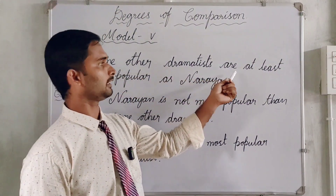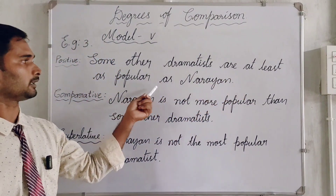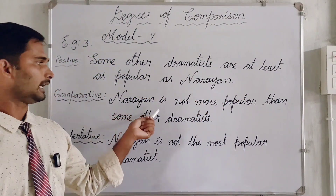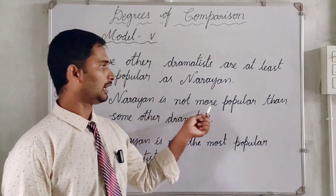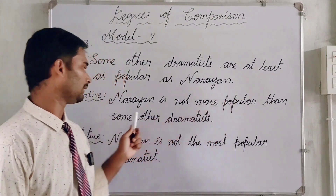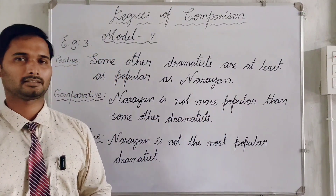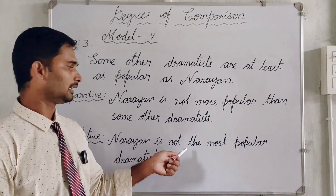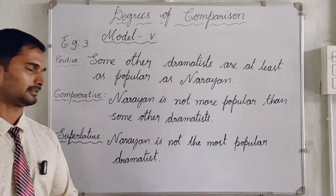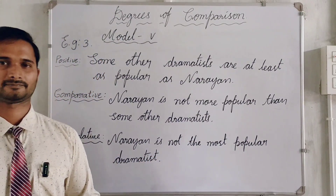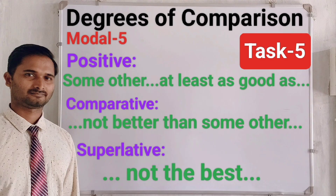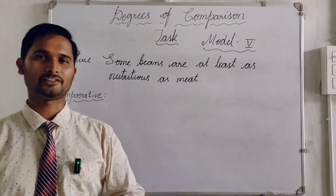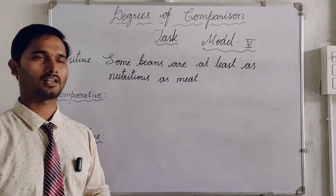Here is an example: Some other dramatists are at least as popular as Narayan. Comparative: Narayan is not more popular than some other dramatists. Superlative: Narayan is not the most popular dramatist. Let me check how far you understood the degrees of comparison model number five.